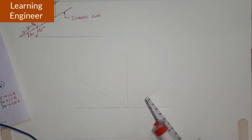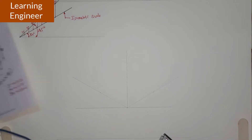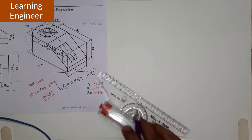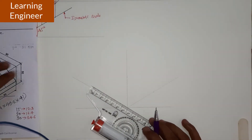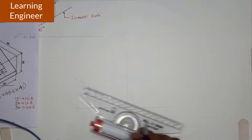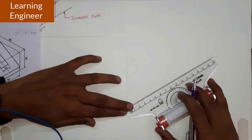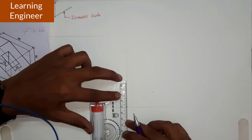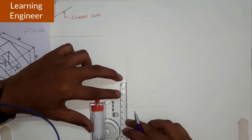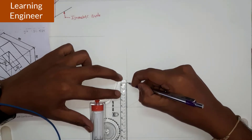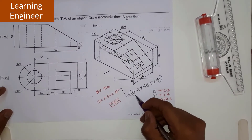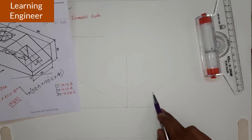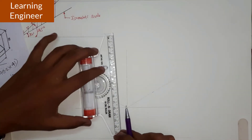We have drawn lines at angles of 30°, 30°, and 90°. Now we mark the dimensions: 98.4 along one axis, 49.2 on the side, and 41 for the height. So this is 98.4, now marking 49.2 on this side, and 41. We draw vertical lines passing through these marked points to complete the box.